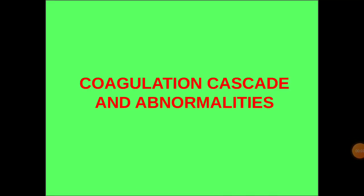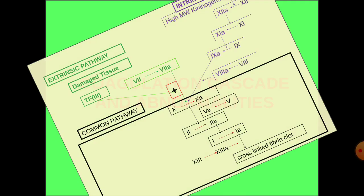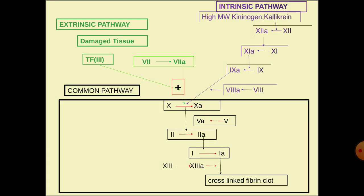Welcome to DocsCoffee YouTube channel. Today we are going to talk about the coagulation cascade and coagulation abnormalities. The coagulation cascade has three pathways: the extrinsic pathway, the intrinsic pathway, and the common pathway.